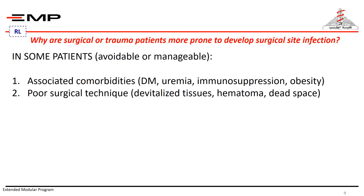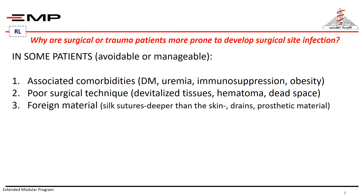Poor surgical technique is an avoidable cause that can predispose to surgical site infection. Unnecessary tissue dissection devitalizes tissues and makes them more susceptible to bacterial invasion and colonization. You should close any dead space when closing your wound to avoid exudate collection. Meticulous hemostasis is important to avoid hematoma collection — any collection or hematoma is a good medium for bacterial growth. Leaving foreign material within the wound increases the possibility of surgical site infection; it can harbor bacteria, so avoid using non-absorbable braided sutures under the skin — that is typically silk sutures.